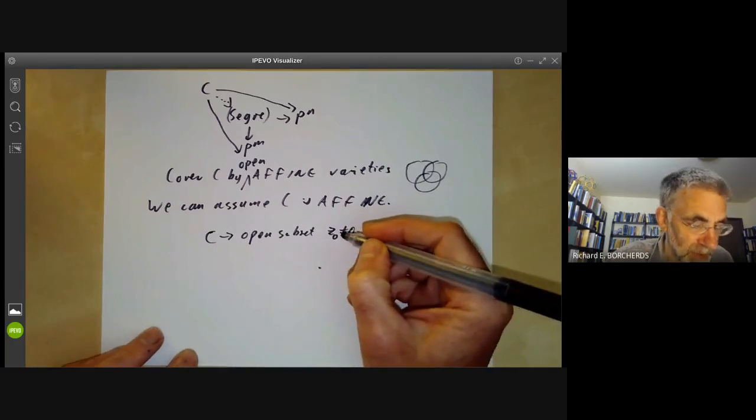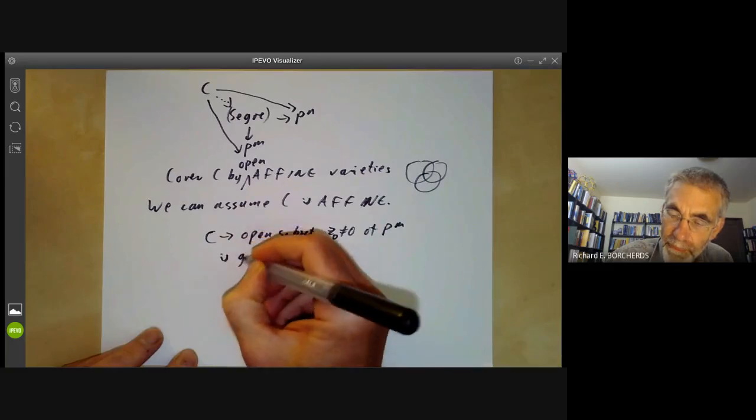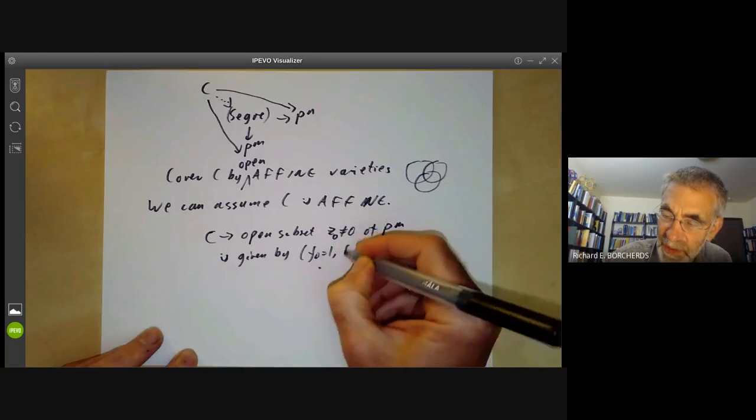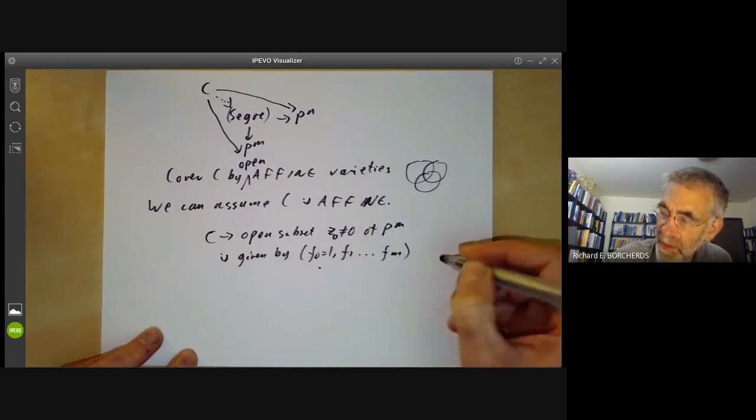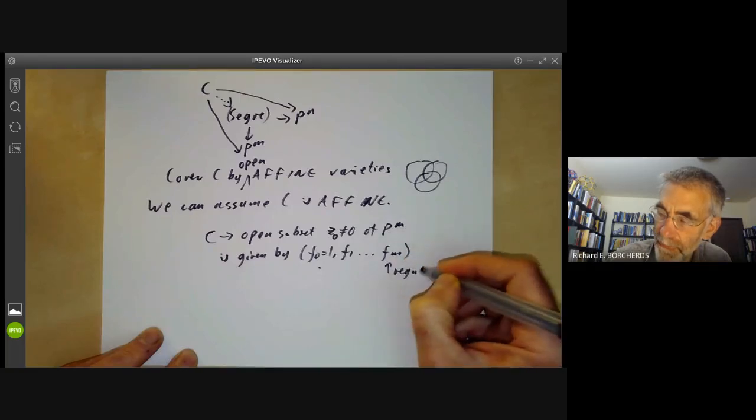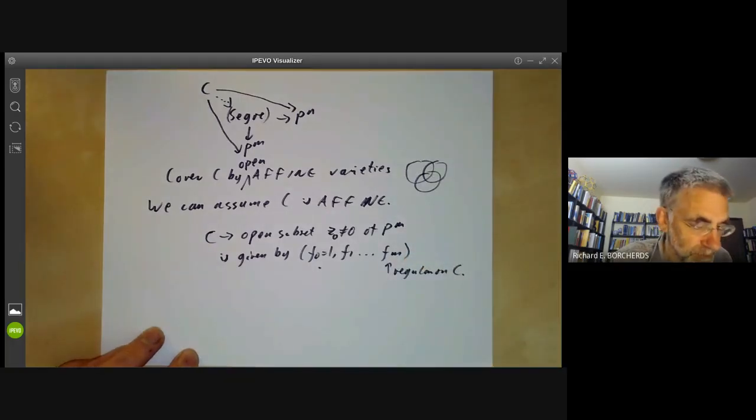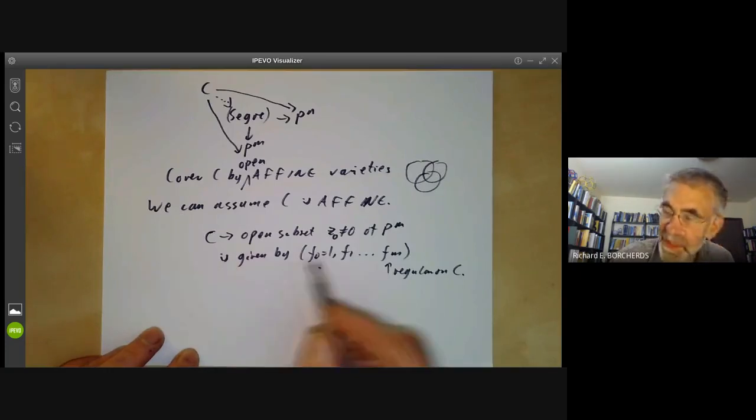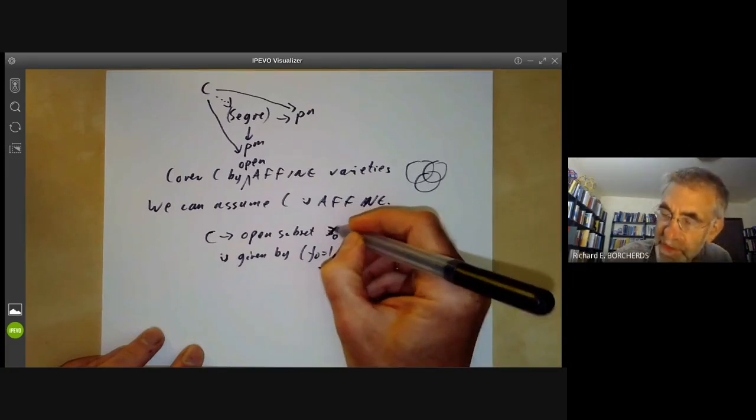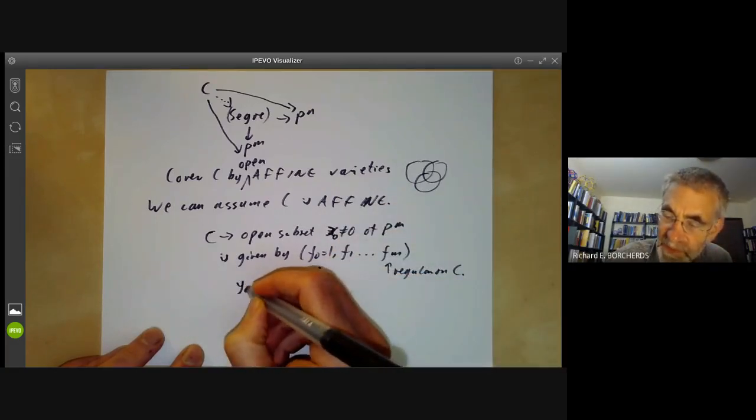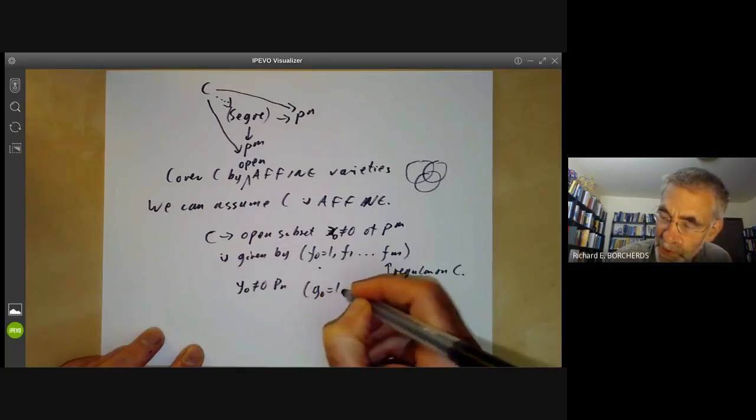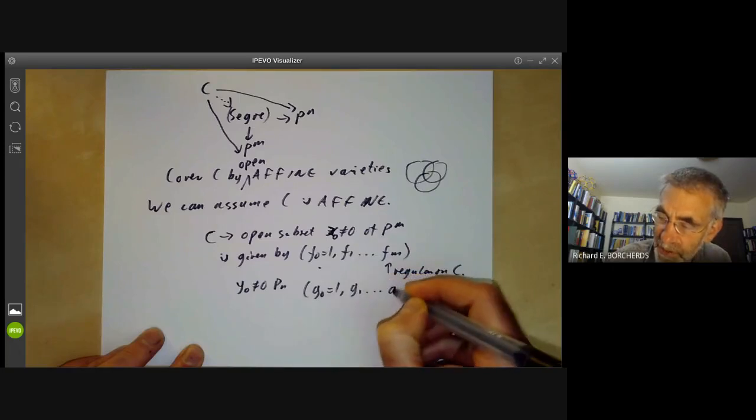So Z naught not equal zero is given by a set of functions. We take F naught equals 1, F1 up to FM, where all these Fi's are just regular on C. Similarly, a morphism to the subset Y naught not equal zero of P to the N is given by G naught equals 1, G1 up to GN.